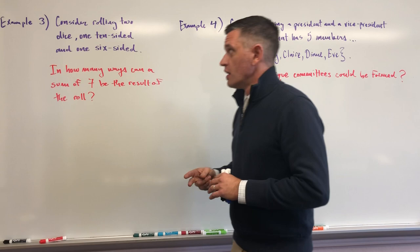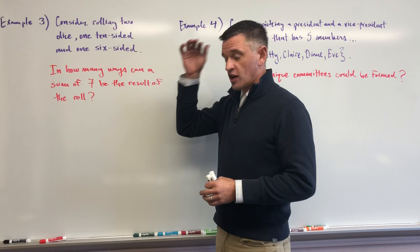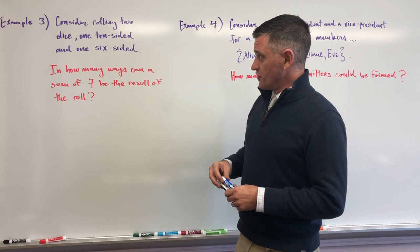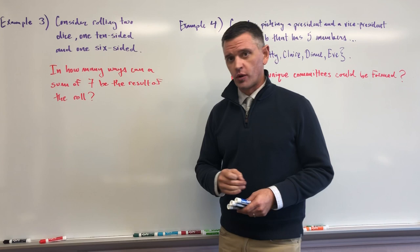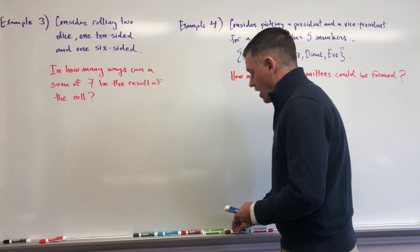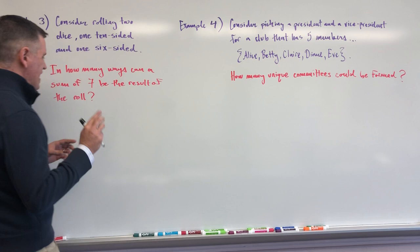A ten-sided die and a six-sided die. The six-sider we already talked about. The ten-sided die is exactly what you think — it has ten sides numbered one through ten. What we're interested in finding out this time is the number of ways we can obtain a sum of seven after rolling these two dice. So say we roll them and get a five on the ten-sider and a two on the six-sider — that gives us a sum of seven, which will be one of the possible outcomes we're going to look at.